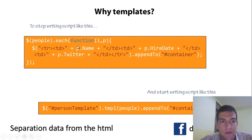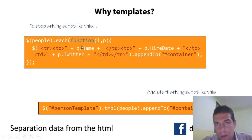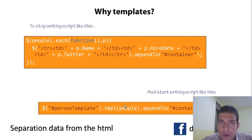Pretty much, you have a list of people and you loop through that list and print out to a specified HTML tag — the person name, hired date, Twitter name — to a container element. With jQuery templates, you just assign the template, give it the data, and append it to the container. You can see the simplified code with separation of data and HTML, which is the easiest way to explain why we need jQuery templates.